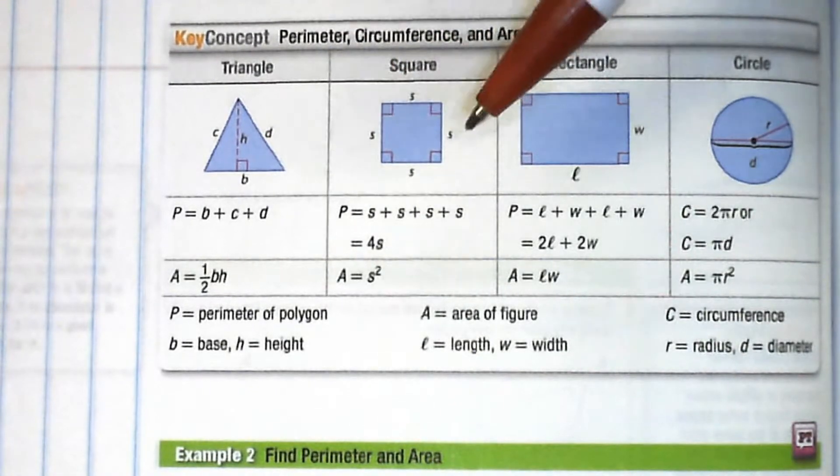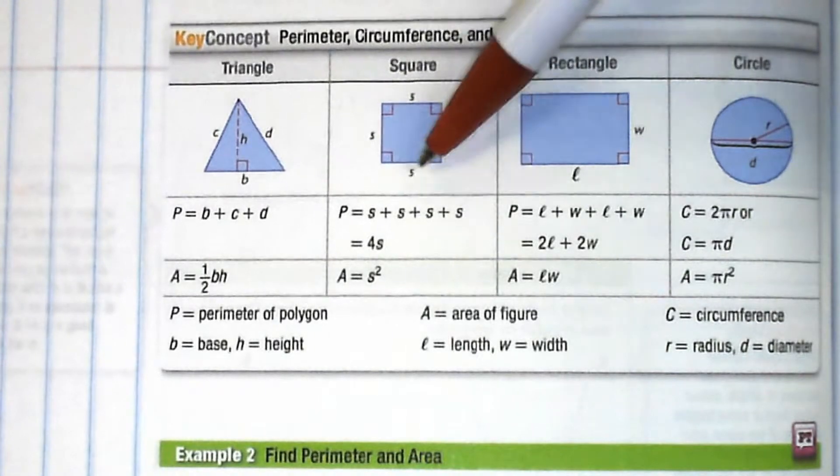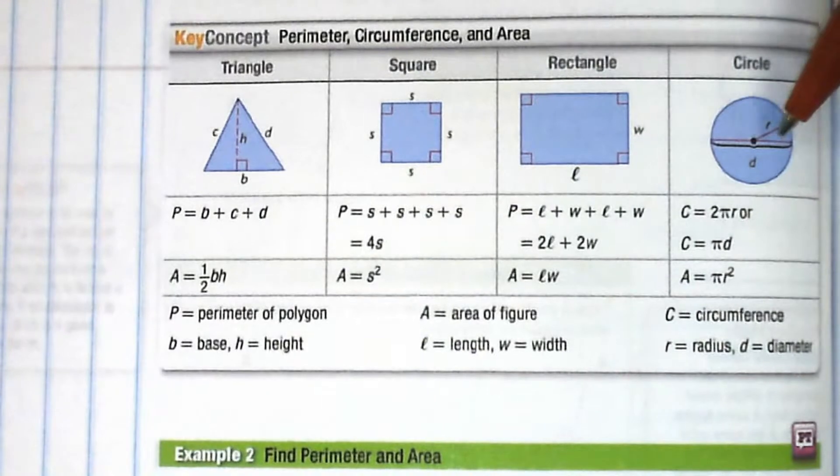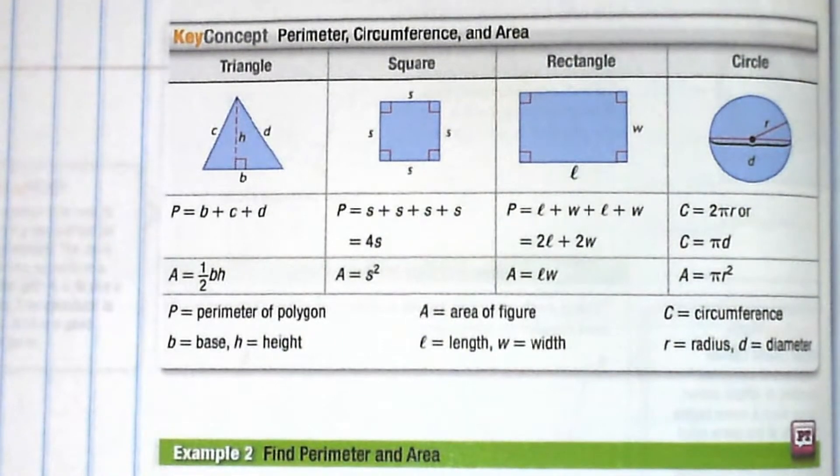The area for a square is side length times side length, so in this case side length squared. Area for a circle is pi r squared. That should be review for you. If it's not, you definitely want to memorize that chart.